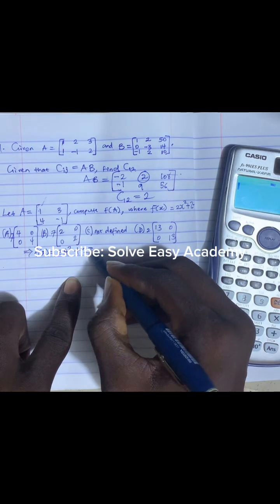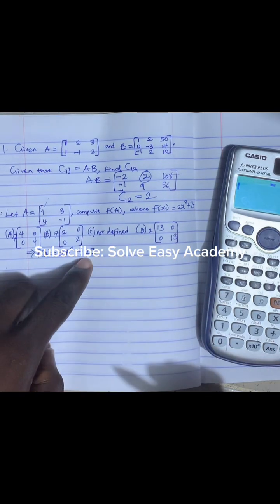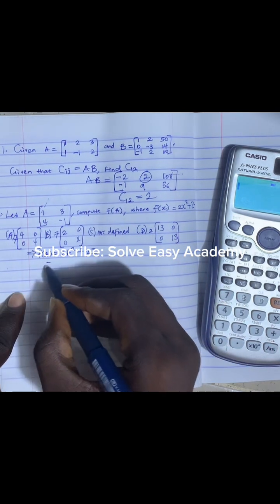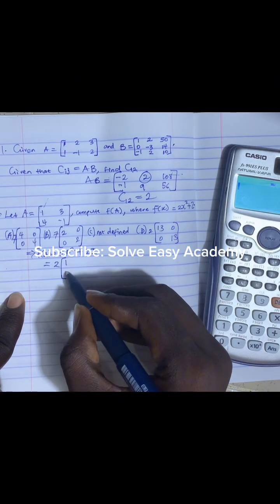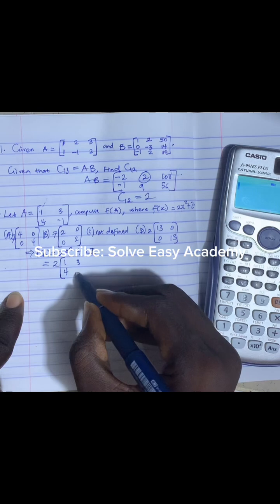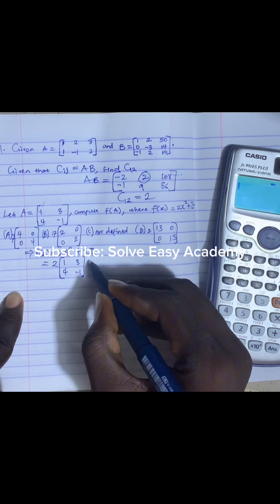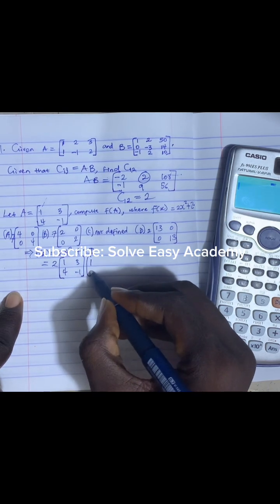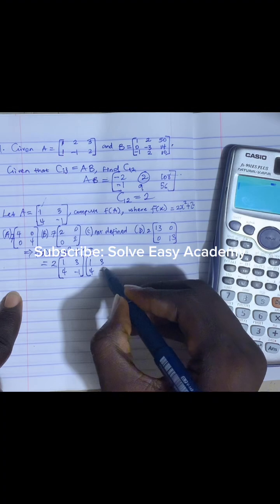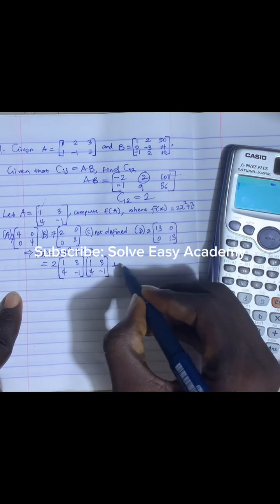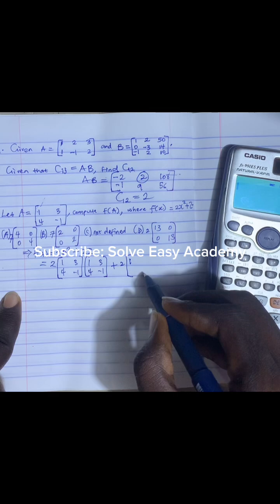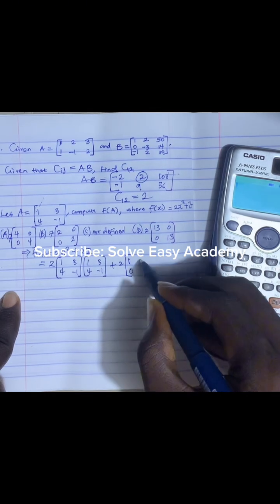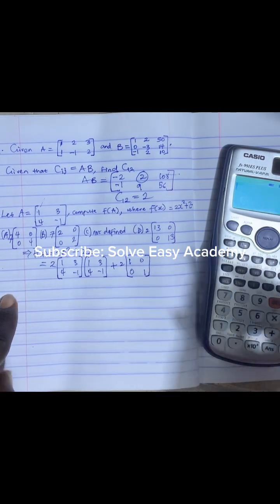So we have to make this 2 look like a matrix. We do that by adding an identity matrix which is I. And this is the same thing as saying 2 into A squared means 1, 4, 3, minus 1 times itself again because we have A squared, so it is multiplying itself, then plus 2 into our identity matrix.